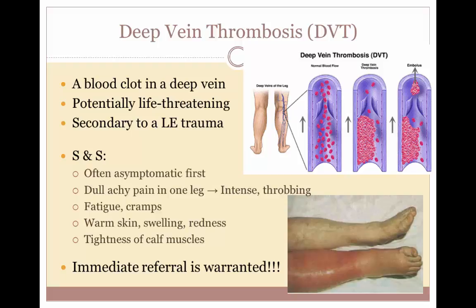Deep vein thrombosis occurs when a blood clot or thrombus forms in one or more of the deep veins in your body, usually your legs. It can cause leg pain or swelling, but may also occur without any symptoms. Deep vein thrombosis can happen if you do not move for long periods of time, such as after surgery or following an accident. DVT is often asymptomatic at first. A dull, achy pain in one leg can begin the appearance of symptoms, starting in the calf and feeling like cramping or soreness, increasing to intense throbbing pain. Warm skin, swelling, redness, and tightness of the calf muscle are also common signs.